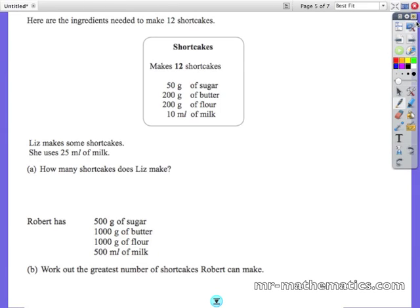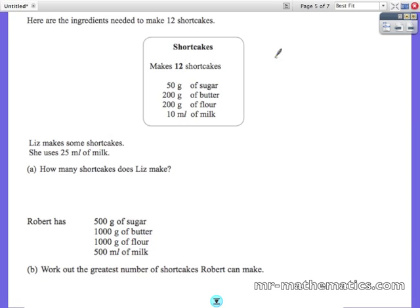So this question is all about equivalent ratios. To make 12 shortcakes we need 25ml of milk, so we are going to write that as a ratio of shortcakes to milk.